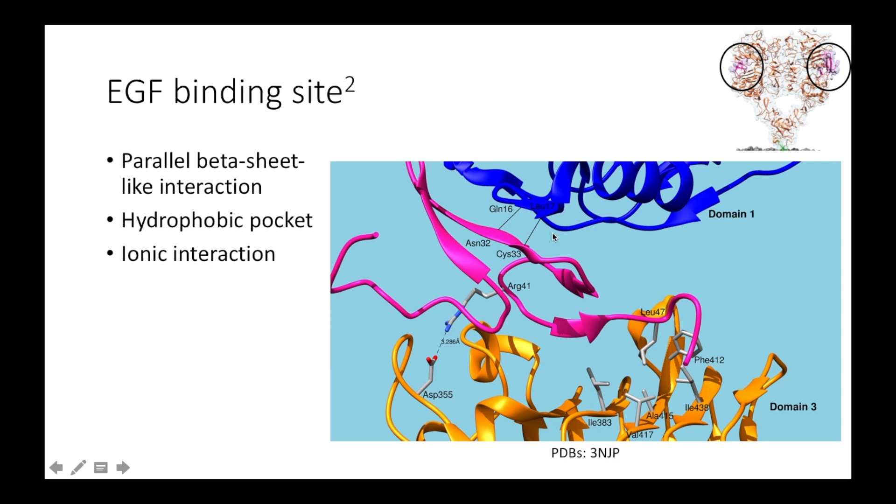EGF forms parallel beta sheet-like interactions between itself and domain 1. A conserved arginine residue forms a salt bridge that helps link EGF with domain 3. And finally, a leucine residue reaches into a hydrophobic pocket formed by these residues on the surface of domain 3.